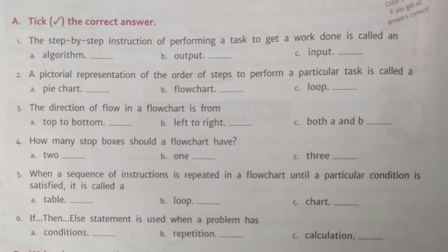Question number 5: when a sequence of instructions is repeated in a flowchart until a particular condition is satisfied, it is called a dash. Options are table, loop, and chart. The correct answer is option B, loop. Loop is a sequence of instructions which is repeated until a particular condition is satisfied.